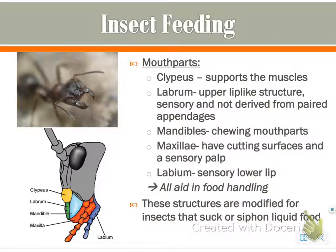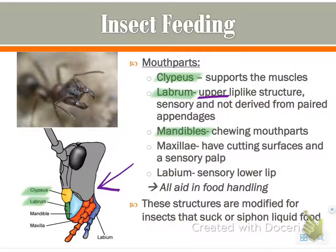Insect feeding — there are five major parts to the mouth of an insect. The clipeus just supports the muscles. The labrum is the upper lip-like structure — important not to confuse labrum (upper) with labium (lower). The mandibles are the chewing mouth parts. The maxillae have the cutting surfaces, which help chew or cut food. And the labium is the sensory lower lip. All of these parts aid in food handling.